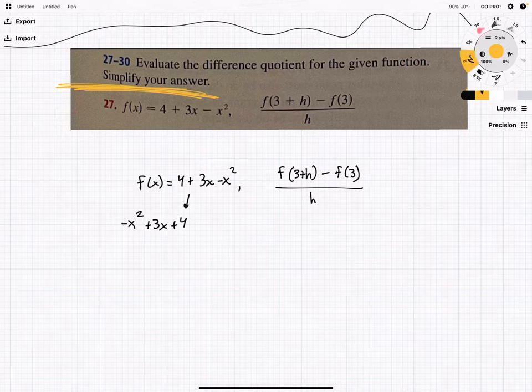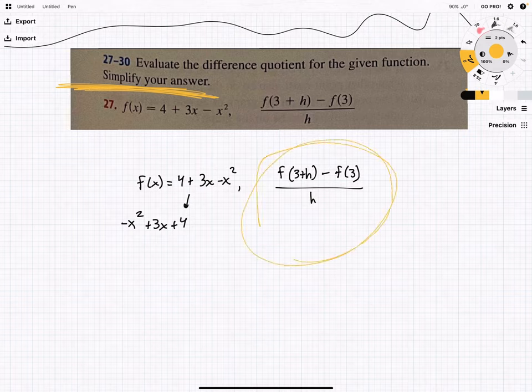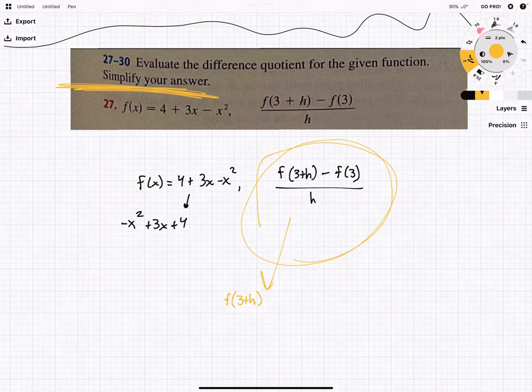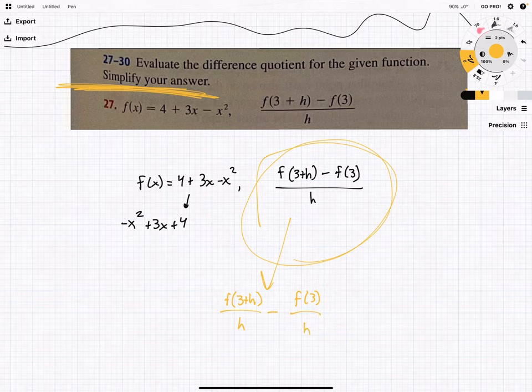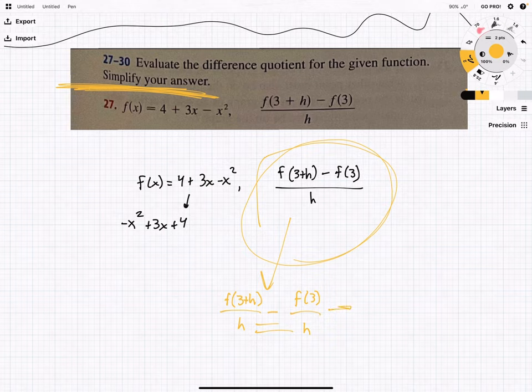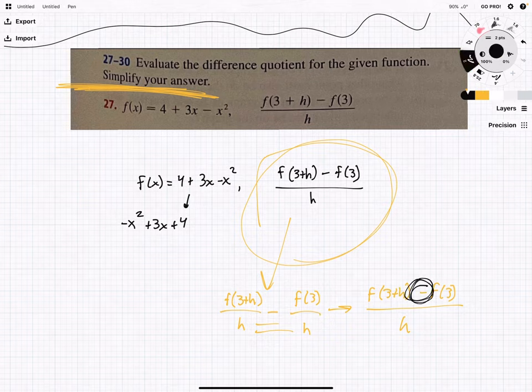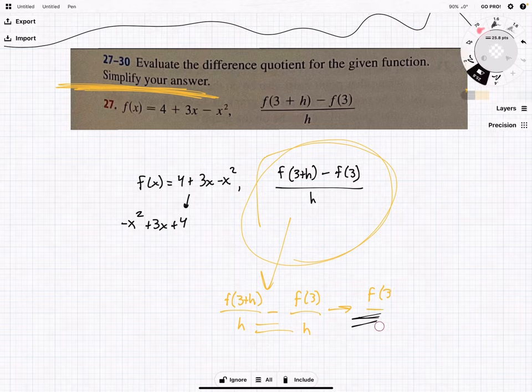Now here, this difference quotient, it's kind of a weird word, but what that means is, essentially, if we were to break this up, we would have f of 3 plus h over h minus f of 3 over h. And so because they have common bases, then you can simplify it and have f of 3 plus h minus f of 3 all over h. So therefore, it is a difference and a quotient, because it's all over h.